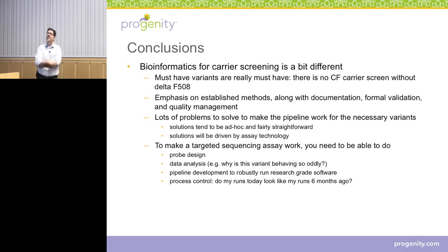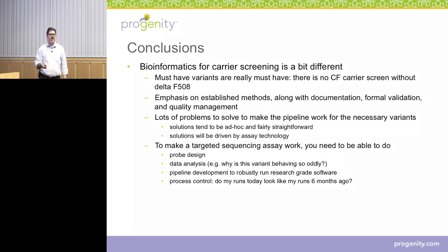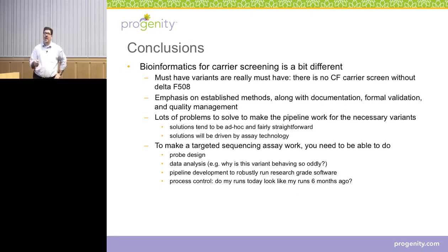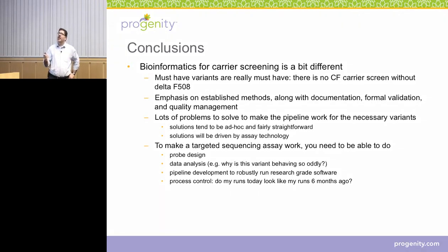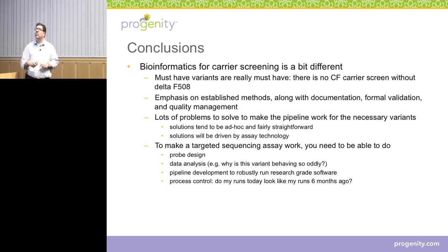The conclusions from my carrier screening section: it's a little bit different from a lot of other clinical sequencing. The issue here is that must-have variants are really must-have — you have to have them in order to have a good test. There is no cystic fibrosis carrier screen unless you can get delta F508. In this world, we really emphasize established methodologies along with documentation, formal validation, and quality management — this is really more like professional software development than a lot of other bioinformatics stuff. You'd really like to be using a method other people have been working on for a long time, if at all you can. You have a lot of problems that you have to solve to make the pipeline work for all the variants you're targeting, but the solutions can be ad hoc. You just have to have something that works — as long as it's straightforward, you're pretty happy. The solutions will be driven by your assay technology.